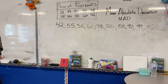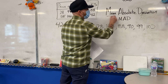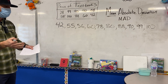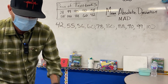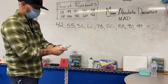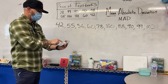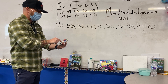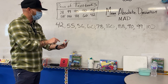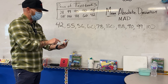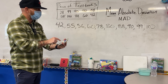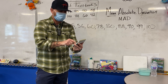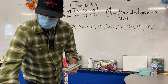All right, so for mean absolute deviation the first thing we need to look at is: how do we find the mean? So we're gonna add all of the numbers. So we add them all up to find the mean. So 42 plus 55, plus 56, plus 60, plus 78, plus 80, plus 88, plus 90, plus 99, plus 102. And that gave me 750.